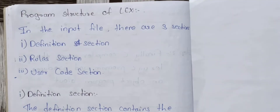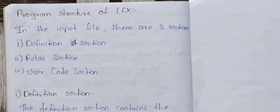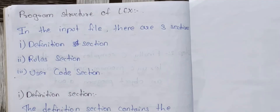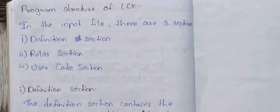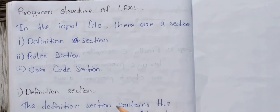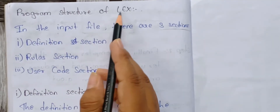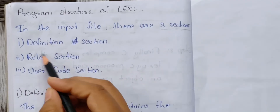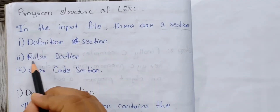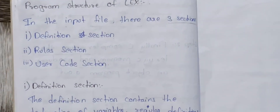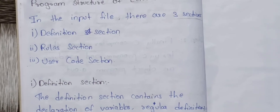Let me explain the program structure of Lex. This topic is very simple. In the input file, there are three sections: the Definition section, the Rules section, and the User Code section. We will talk about all three of these sections.